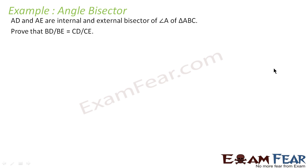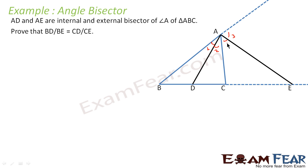Let's take one example. AD and AE are internal and external bisector of angle A of triangle ABC. We have to prove that BD by BE is equal to CD by CE. Let's draw this triangle. We have this triangle ABC. In this we are told that AD and AE are internal and external bisector of angle A. So let's draw this internal angle bisector, this is AD. Also to draw external angle bisector AE. Now we have angle 1, angle 2, and this suppose there is 3 and this is 4. So we are given that angle 1 is equal to angle 2, and angle 3 is equal to angle 4.